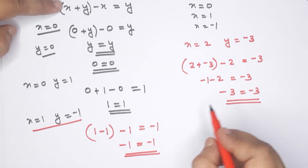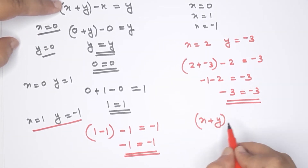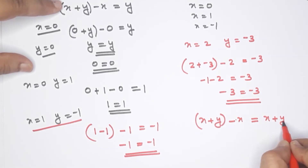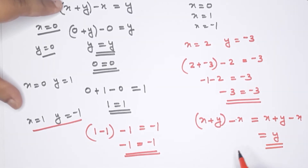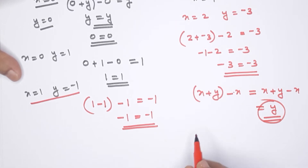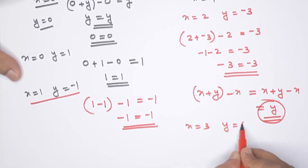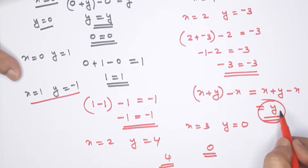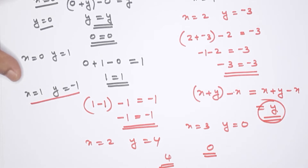Here we write x plus y, in one group, minus x. Open a bracket: x plus y minus x — this equals y. These two values are negative and positive values. The answer is y. So x equals 3, y equals 0 gives answer 0. And x equals 2 gives answer 4, because y is the answer. Clear?